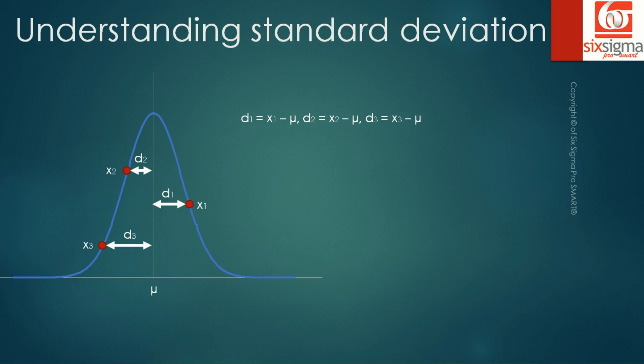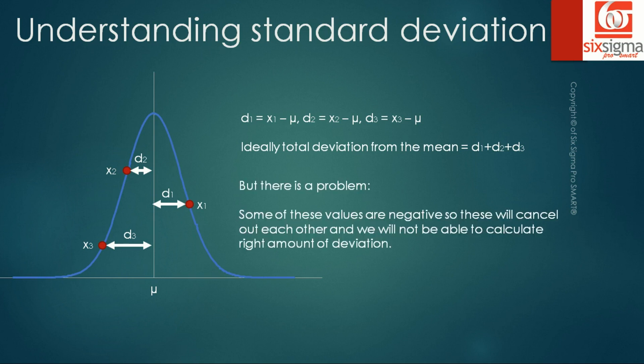Therefore, if we were to look at the total deviation from the center line, we can simply add them all up and we'll say it is d1 plus d2 plus d3. But wait, we have a problem here. Some of these distances could be negative and adding a negative to a positive might just cancel out the deviation and we'll not be able to see the true picture.